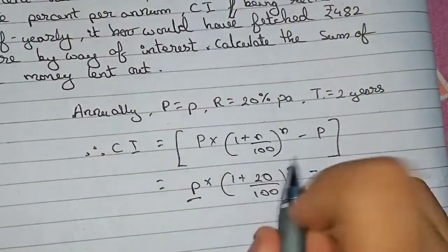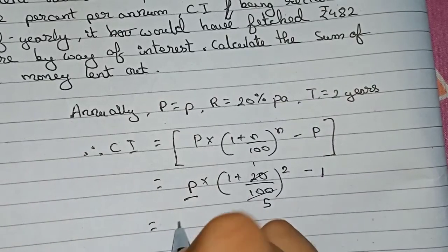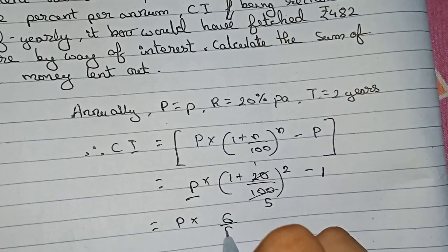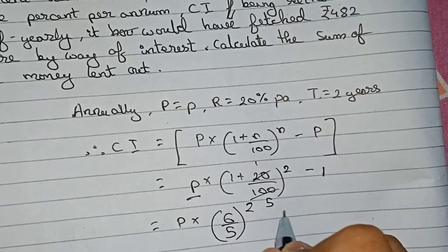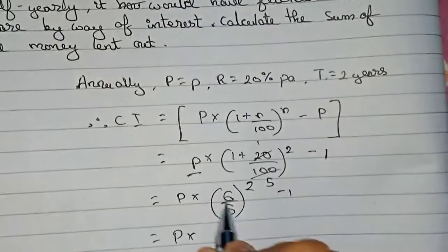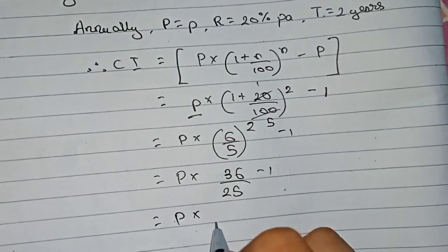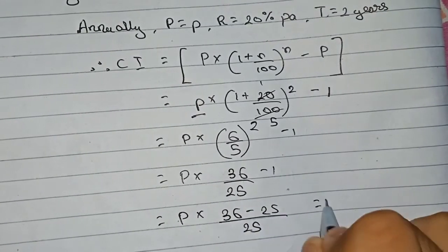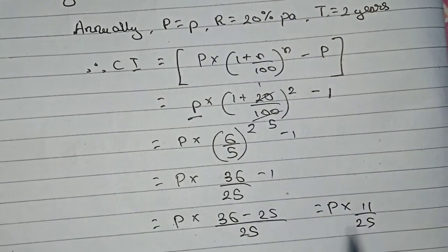Simplifying: 20/100 = 1/5, so (1 + 1/5) = 6/5. Therefore it becomes P into [(6/5)² − 1] = P into [36/25 − 1] = P into [36/25 − 25/25] = P into 11/25. So the compound interest for the annual portion is P × 11/25.